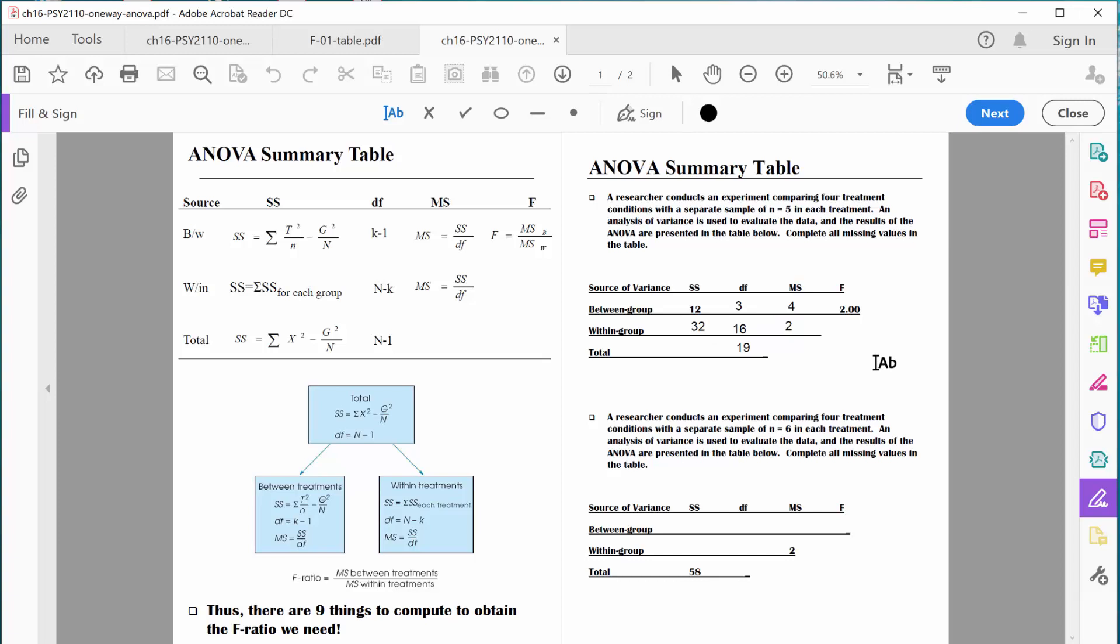And at this point, in order to find sum of squares total, we can just take sum of squares between groups and add sum of squares within groups. Twelve plus thirty-two is forty-four.